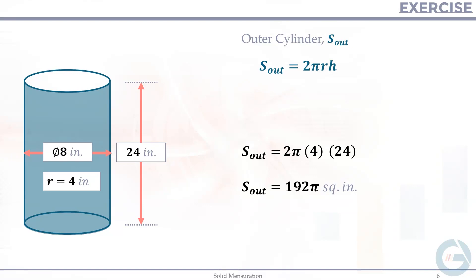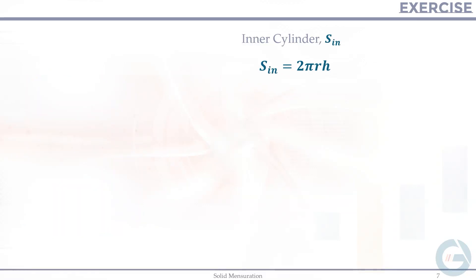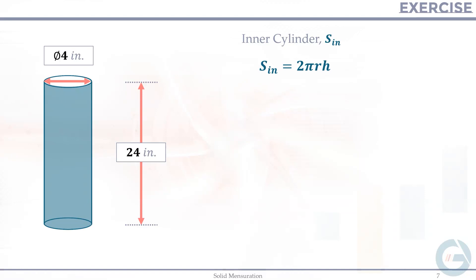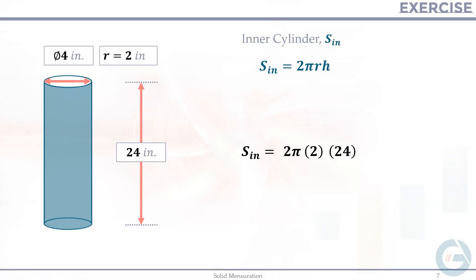For the inner cylinder, we use the same formula but with a different radius. The inner diameter is 4 inches, so the radius is 2 inches. The lateral surface area of the inner cylinder equals 2π × 2 × 24 = 96π square inches.